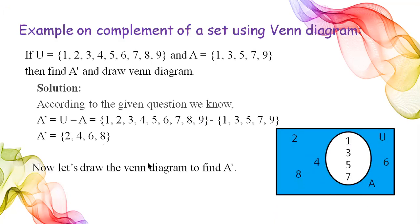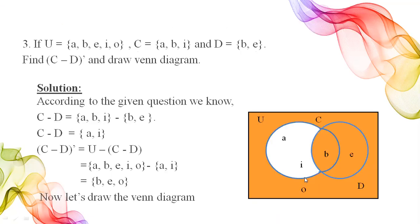In the Venn diagram, the universal set contains elements 1 through 9. Set A contains elements 1, 3, 5, 7 — the shaded blue area shows the complement of A.